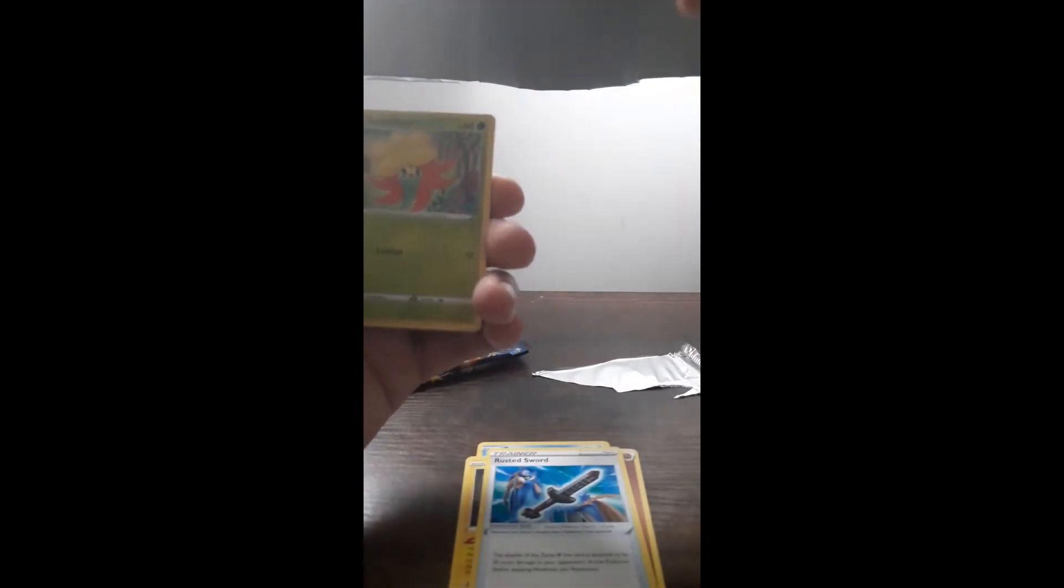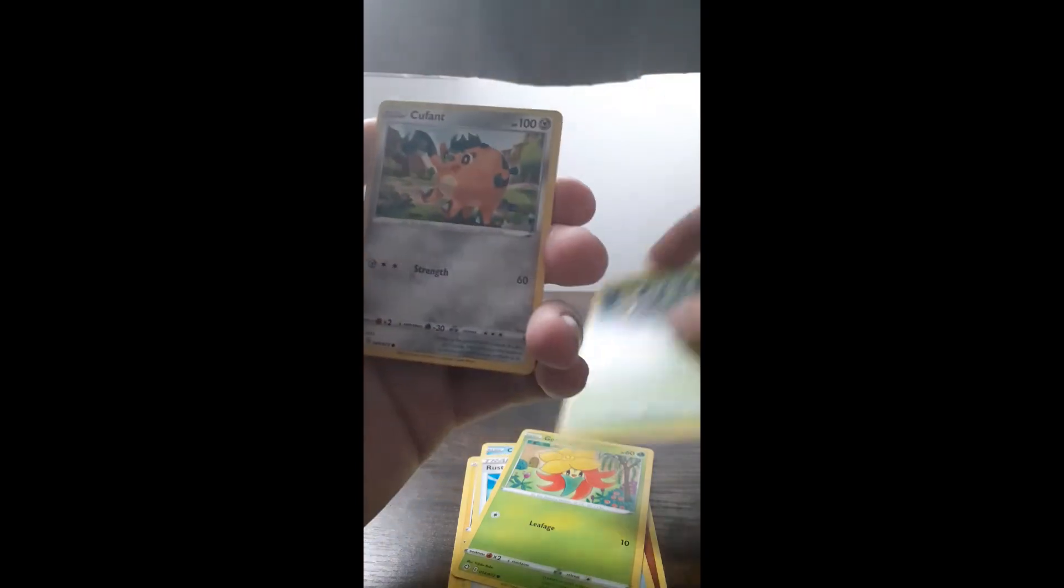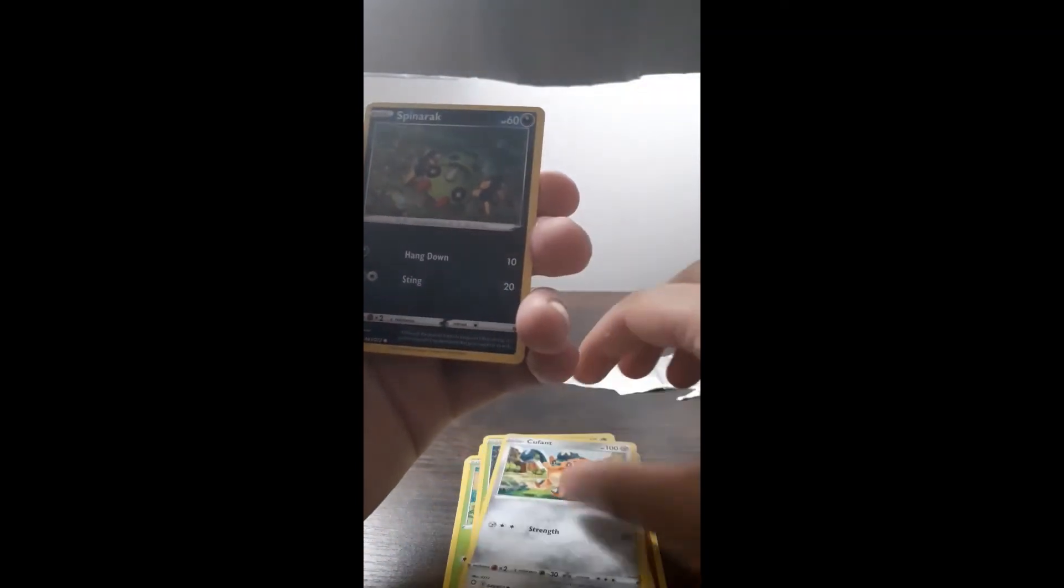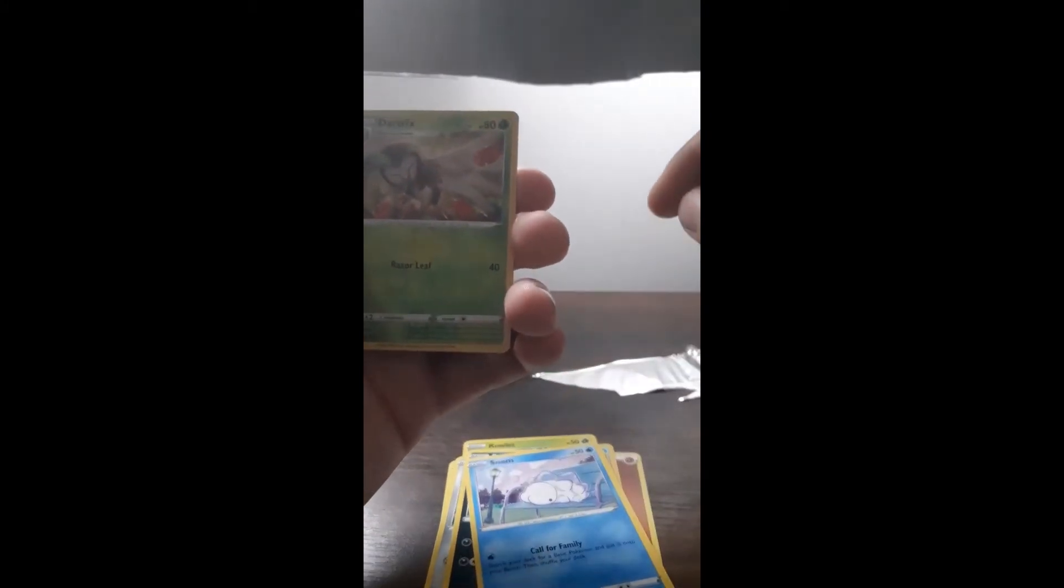Fighting Energy. Cramorant. Rotom. Rusted Sword. I don't know how to say this name. Gossifleur. Rowlet. Cufant. Spinarak. Snom. Dartrix. Professor's Research.